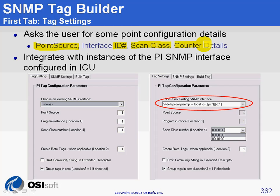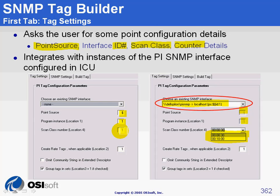Just like in the Performance Monitor plugin, you can see a list here where you choose the interface you want to use. When interfaces are configured in ICA-U, you will see them in the list, and simply choosing them will automatically set the point source, location one, and give you a nice list for the scan classes. When you don't have interfaces configured in ICA-U, you will have to set the point source, the interface ID number, and the scan class manually.